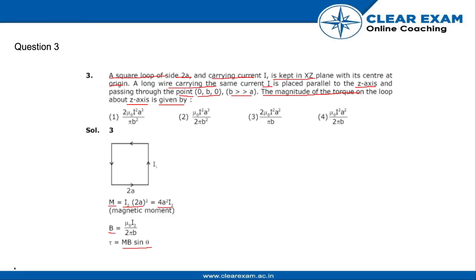The magnetic field on the loop will be μ₀ I upon 2π times the distance between the wire and the square loop, which is b. So μ₀ I by 2π b.